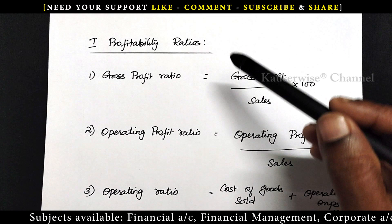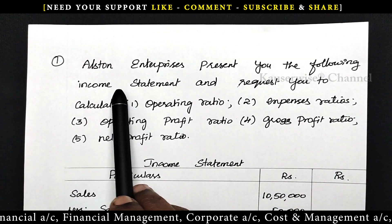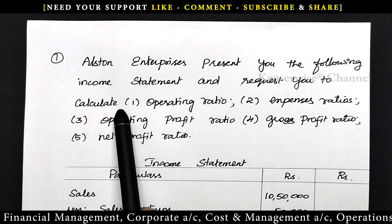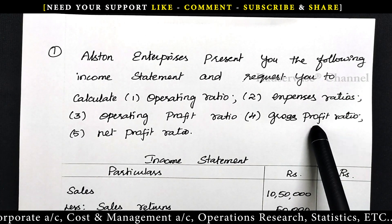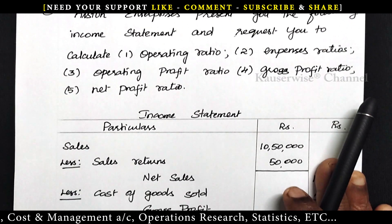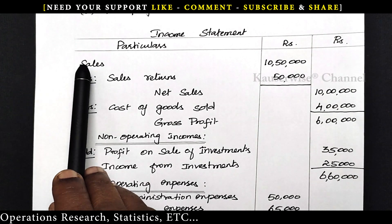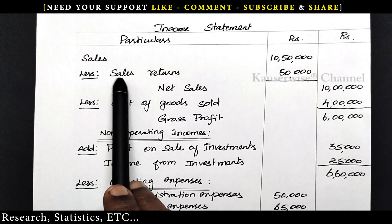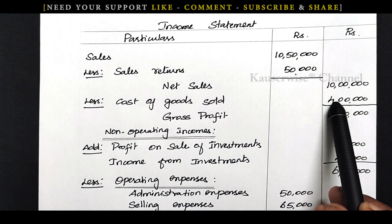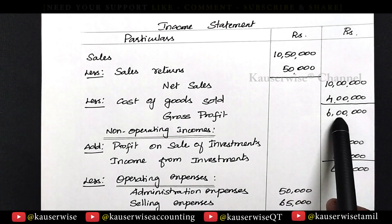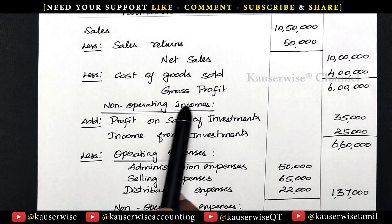Now let us see one numerical problem based on these 5 ratios. Alston Enterprises presents the following income statement and requests you to calculate operating ratio, expenses ratios, operating profit ratio, gross profit ratio and net profit ratio. In the income statement, they started with sales of 10 lakh 50,000 minus sales returns of 50,000, giving net sales of 10 lakhs. Less cost of goods sold 4 lakhs, giving a balance of 6 lakhs as gross profit.